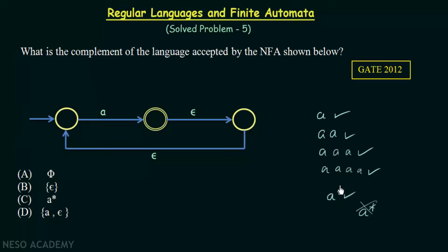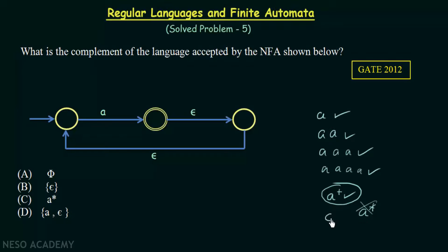This is what the NFA accepts. Now we have to find the complement of this language — the opposite of A+. We only have one symbol which is A; there are no other symbols besides epsilon. So the opposite of A+ will obviously be epsilon, the blank symbol. That is going to be the complement of this NFA.